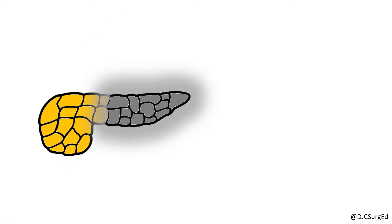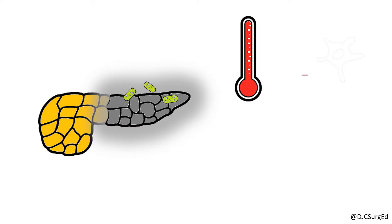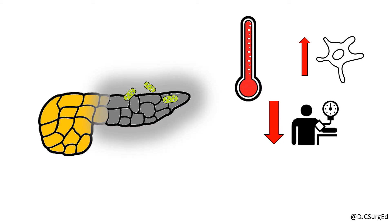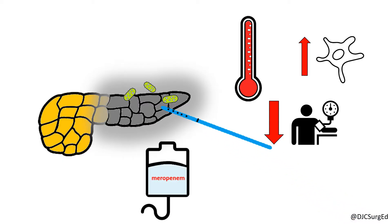Risk of infection with necrosis is about 20% and is suspected in patients with prolonged fever, leukocytosis, or progressive clinical deterioration. Antibiotics should not be given prophylactically, but only for a high level of clinical suspicion. Infected necrosis is best treated with antibiotics and percutaneous drainage.